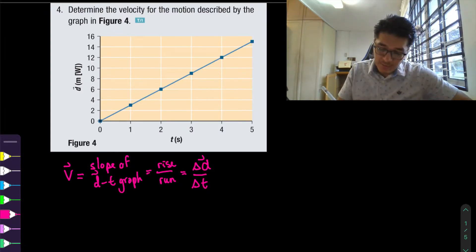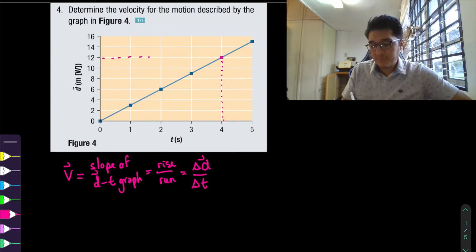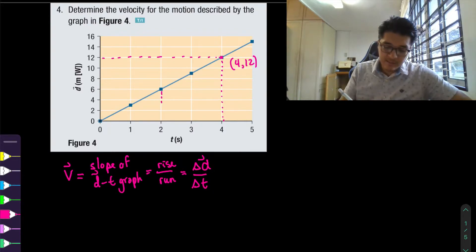So here we want to pick nice points and by nice I mean ones that are lining up with our axis that they provided for us. So here the point is going to be (4,12) and looking for another nice point which again lines up nicely on the axis it's going to be (2,6).